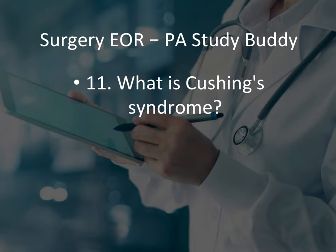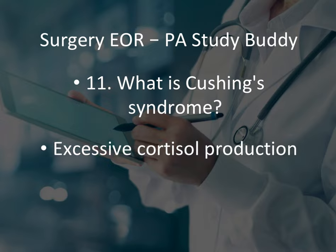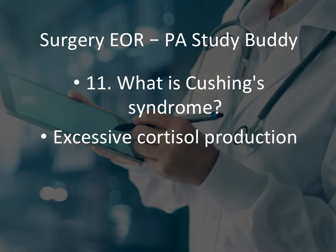Number eleven: what is Cushing's syndrome? Cushing's syndrome is excessive cortisol production. They're going to give you a stem about lack of cortisol, too much cortisol, or other different hormones, but too much cortisol production is Cushing's syndrome.